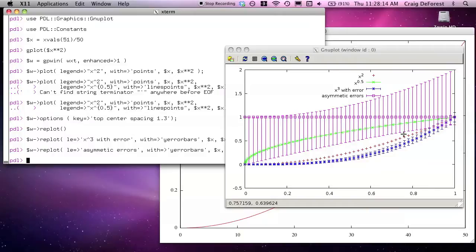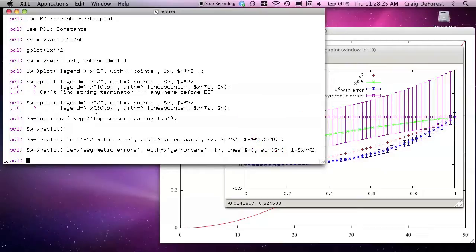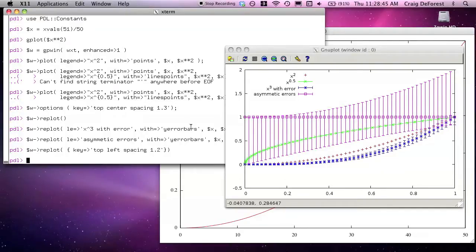So let's do ones of x and how about sine of x and maybe 1 plus x squared. And you can see on the bottom here, we're doing the sine of x curve, on the top we're doing x squared, and that is lines and points. Over here our legend is a little bit off, so let's move that. We can feed in plot options to either plot or replot in a leading or trailing hash ref. So you'll see that in the demos that are coming up. Key left top left spacing 1.2, and there we go. There's our finished plot.